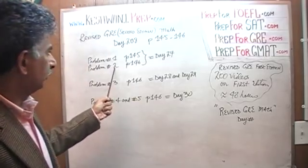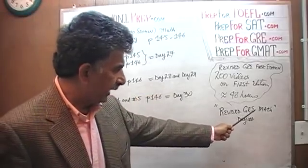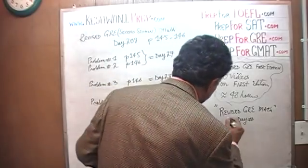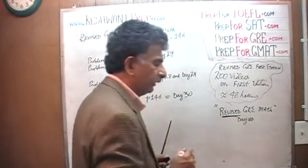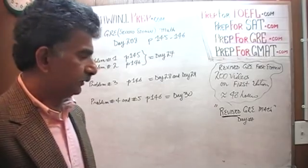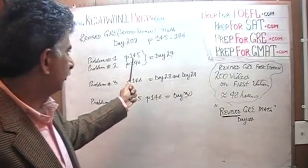Problem number 1 and 2, you will find it on day number 27. Just type in this tag, Revised GRE Math. Make sure you type in Revised, otherwise you will end up getting my old videos from the 10th edition of the old GRE. You don't want that. Type in Revised GRE Math and then day number. Day number 27, you will see a solution to problem number 1 and 2.